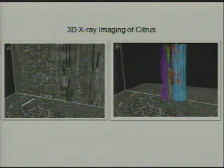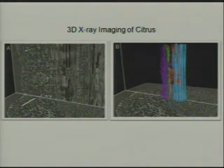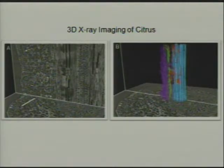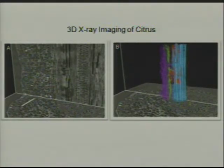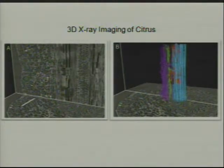We can display a transverse or cross-section and a longitudinal section at the same time. The powerful thing about this visualization tool is that we can replace the longitudinal plane with a three-dimensional representation of the different cell types. In the purple we've got the parenchyma tissue, the green is the phloem cells, the red is the rays, and blue is the xylem. So we can start to look at the organization of xylem and phloem in 3D.